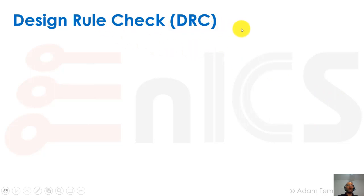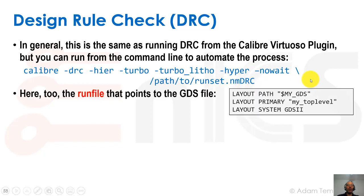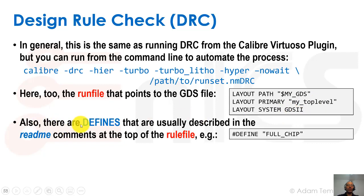Now we'll discuss design rule check. Many of you have done layout and run DRC in a circuit course — we're doing the same thing here, just on a much larger design where polygons were exported by an automatic tool. To automate it, we run 'calibredrv -DRC' and point to a run set that is the DRC run set. The run set specifies the layout path, pointing to the GDS top level in GDS format.